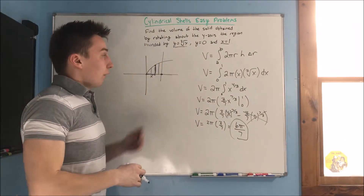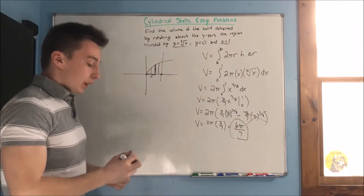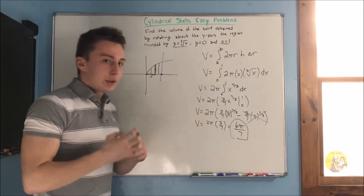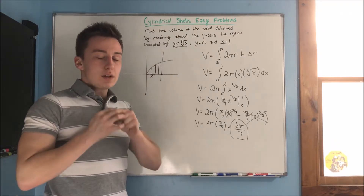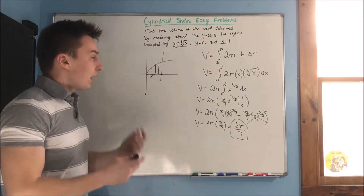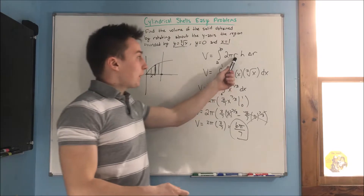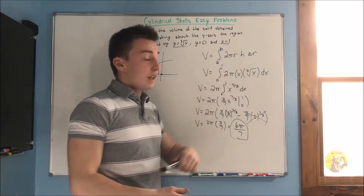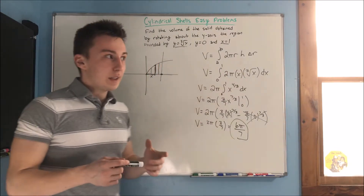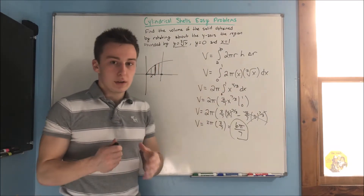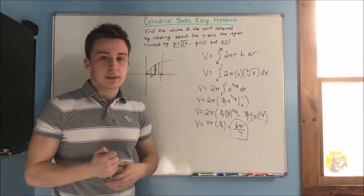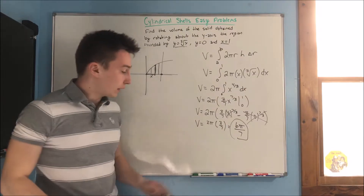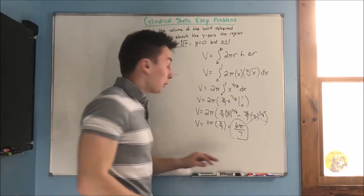For these cylindrical shell problems, make sure you can imagine what your cylinder is going to look like — then it's a lot easier to find your radius and your height, which are honestly the hardest part of cylindrical shells. That does it for the first problem.